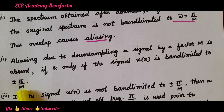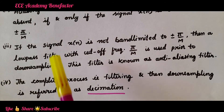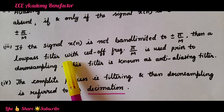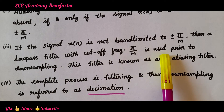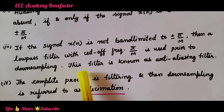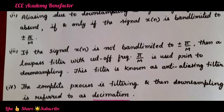If the input signal x of n is band limited to plus or minus pi by M, aliasing will not take place and overlapping of the samples will not occur. Third point: if the signal x of n is not band limited to plus or minus pi by M, then a low pass filter with a cutoff frequency of pi by M is used prior to down sampling. This filter is known as the anti-aliasing filter. The complete process — filtering and then down sampling — is called or referred to as decimation.